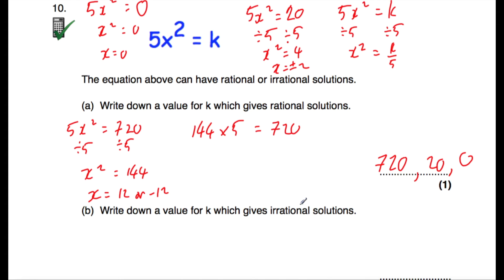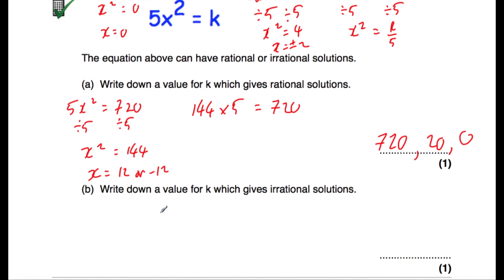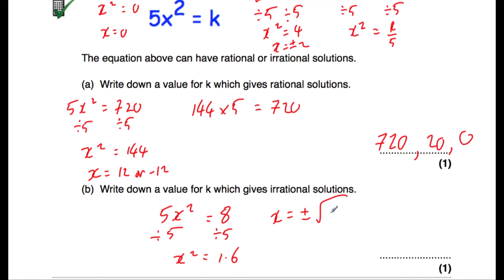Part b asks for a value of k which gives irrational solutions. Let's try k equals 8. Then 5x squared equals 8; dividing by five, x squared equals 1.6. So x equals plus or minus the square root of 1.6, which is 2 root 10 over 5 or approximately 1.2649... and so on. That would be an irrational solution. So a value for k giving irrational solutions could be 8.